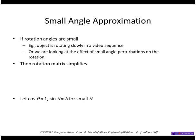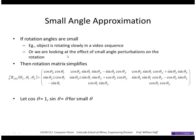We sometimes will look at a simplification of the rotation matrix if the angle of rotations are small. So this could be, for example, if we're looking at a video sequence and the object is rotating slowly, or we might look at a finite difference to compute or estimate a derivative.